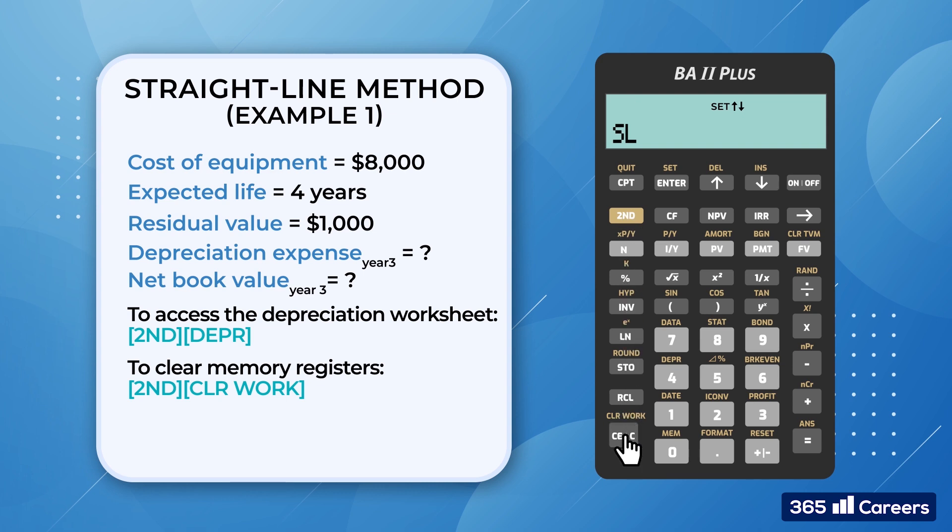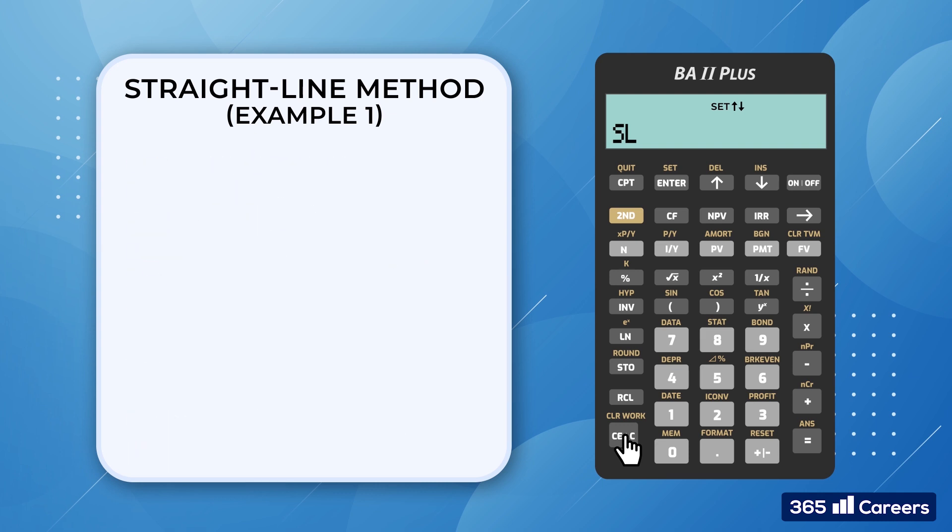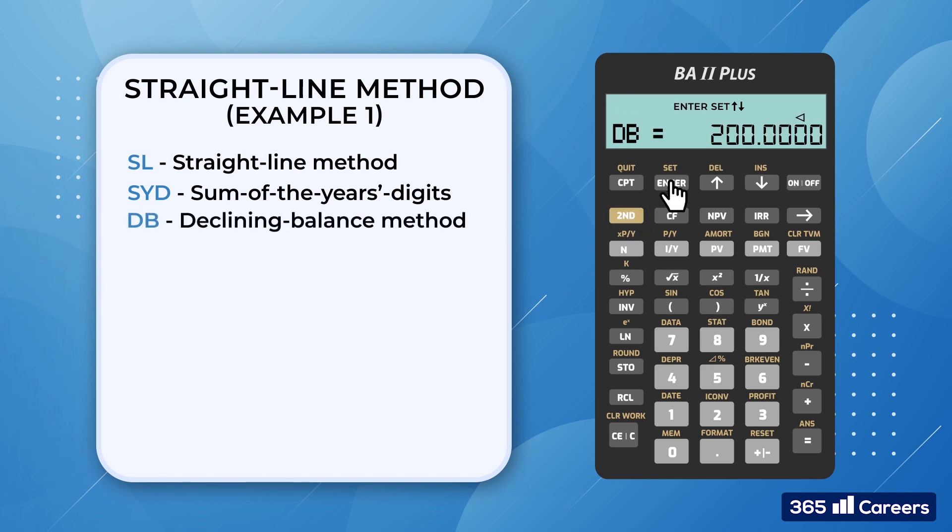The calculator has different program depreciation methods. To toggle between them, we use 2nd set. Let's examine some. SL stands for straight line method. SYD is sum of the year's digits. DB denotes declining balance method, and so on. In this video, we will use only 2 of these methods, SL and DB. Let's set the calculator to straight line method first.